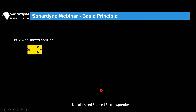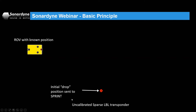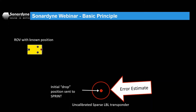If there's no USBL, a transponder at a known position on a structure could be used for range-aiding. Whatever gives the known position, it's sufficient to keep dead reckoning running for the INS. The uncalibrated transponder we've just deployed has an initial drop position taken from the USBL, along with a critical error estimate. That error estimate is sent to the INS Kalman filter as its starting point — indicating how confident we are in that initial position.